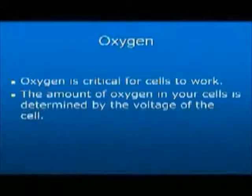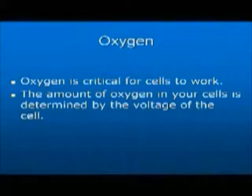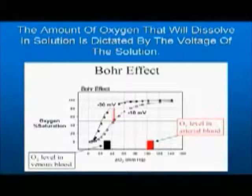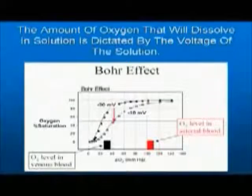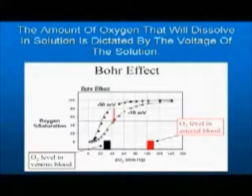We also need oxygen to make our system work. The amount of oxygen that can be in a cell is dictated by the amount of voltage of the cell. This is called Bohr's Law, or the Bohr Effect. As you can see in this graph, the amount of oxygen that can get into the cell if your voltage is at minus 30 millivolts is much greater than if it drops to 10 millivolts. The oxygen saturation goes from 100% down close to 80% by just dropping your voltage 20 millivolts. So when your voltage is low, your oxygen level is low. People who have low voltage, which is almost always the case with chronic disease, will be depleted in oxygen. And of course, the higher altitude you live, the less oxygen that's available and the less pressure as well, so that's a compounding factor.